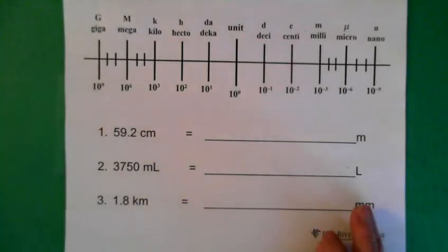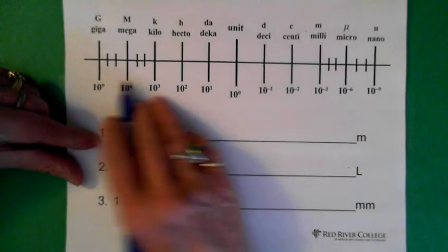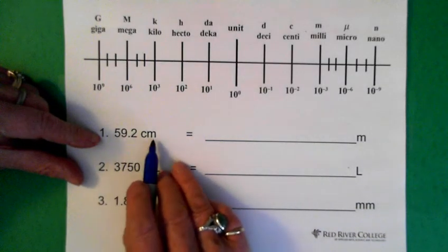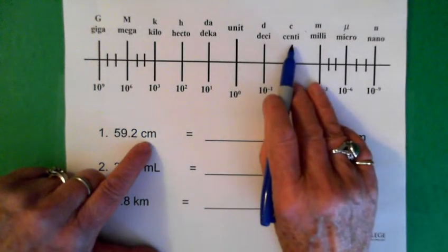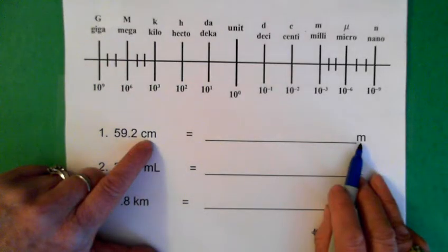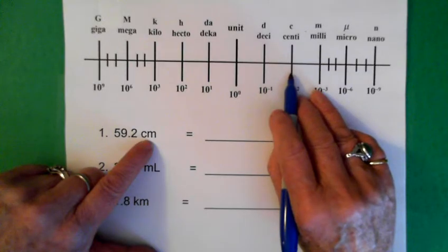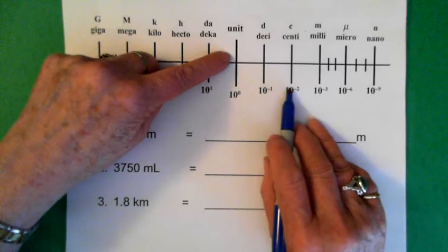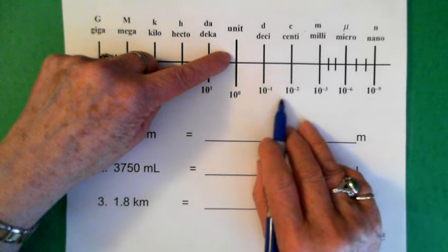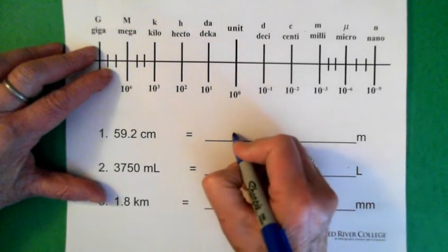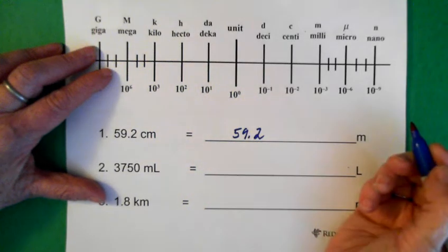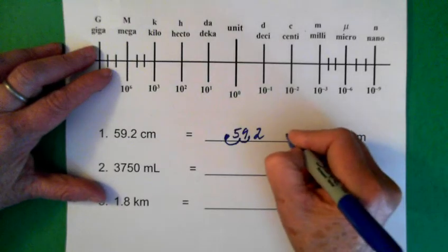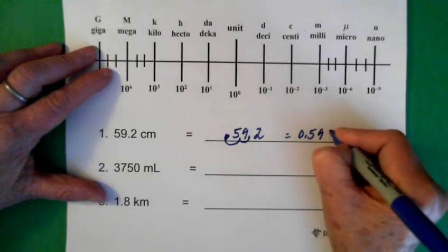Now, how do we move the decimal? Here we have our scale. So, 59.2 centimeters — centi is here, that's where we're starting, and we want to go to meters. Meters has no prefix, so that's our basic unit. Starting at centi, going to unit, we move the decimal two places to the left. We write out our number and move the decimal one, two places to the left. We end up with 0.592 meters.